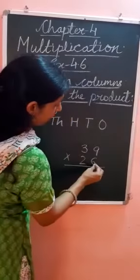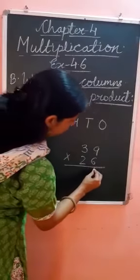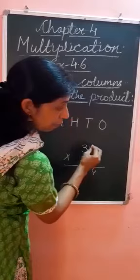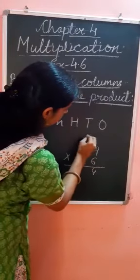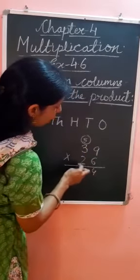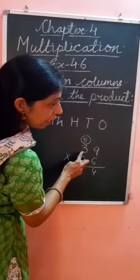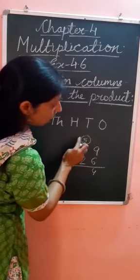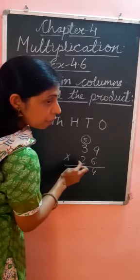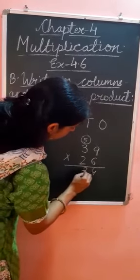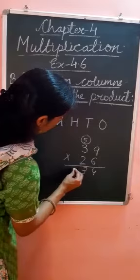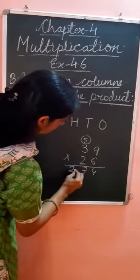Now, start multiplying. 9 times 6 is 54. So we write 4 in ones place and 5 in tens place. Now, we multiply tens place number. So 6 times 3, we get 18. So 18 plus 5, we get 23. So 3 we write in tens place and 2 we write in hundreds place.